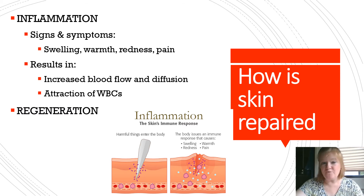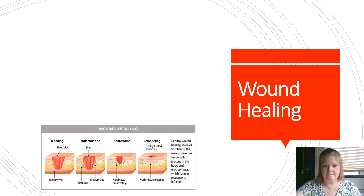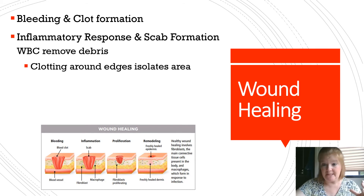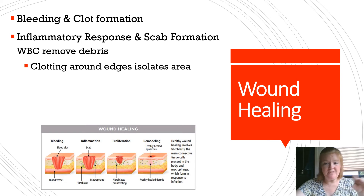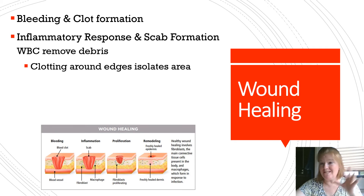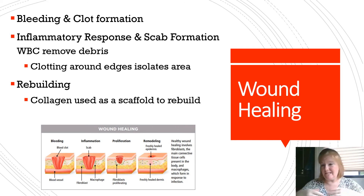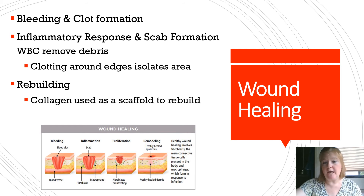The next stage is regeneration, though they can be intermingled. In wound healing, there is bleeding and clot formation first. Then the inflammatory response happens — a scab forms, white blood cells remove debris, and clotting around the edges isolates the area so nothing bad spreads through the body. Then there is rebuilding: collagen is used as a scaffold to lay a framework and rebuild — like scaffolding on a house being re-sided.